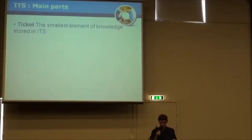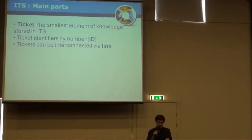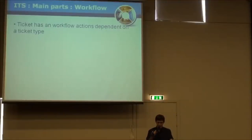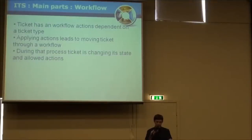The smallest element of knowledge in an issue tracking system is called a Ticket. A ticket is usually identified by a number, and tickets can be interconnected via a link. A ticket has fields for different types. Another important concept is a workflow — ticket has workflow actions dependent on its type. Applying actions leads to moving the ticket through the workflow, and during that process the ticket changes its state and allowed actions.